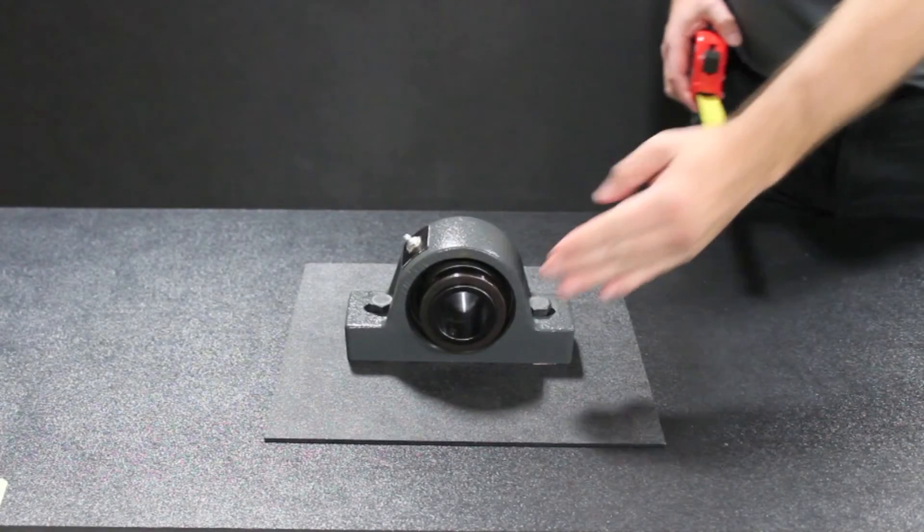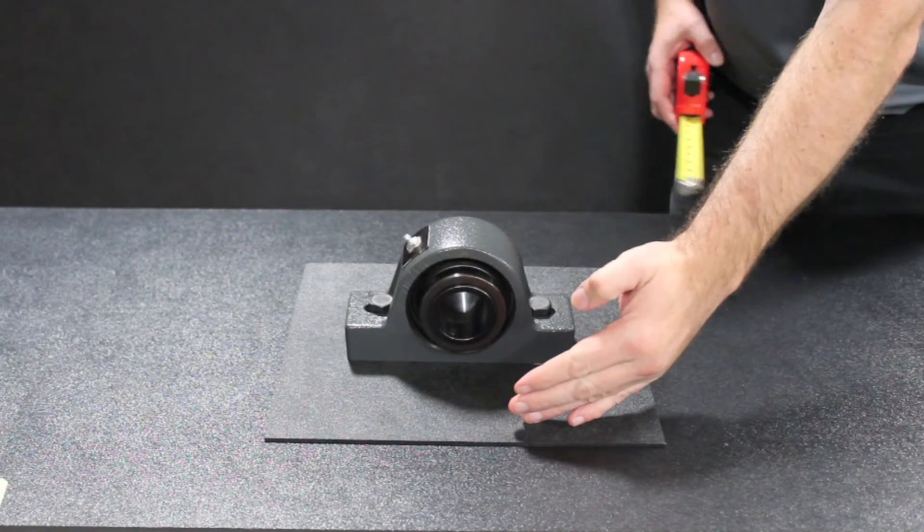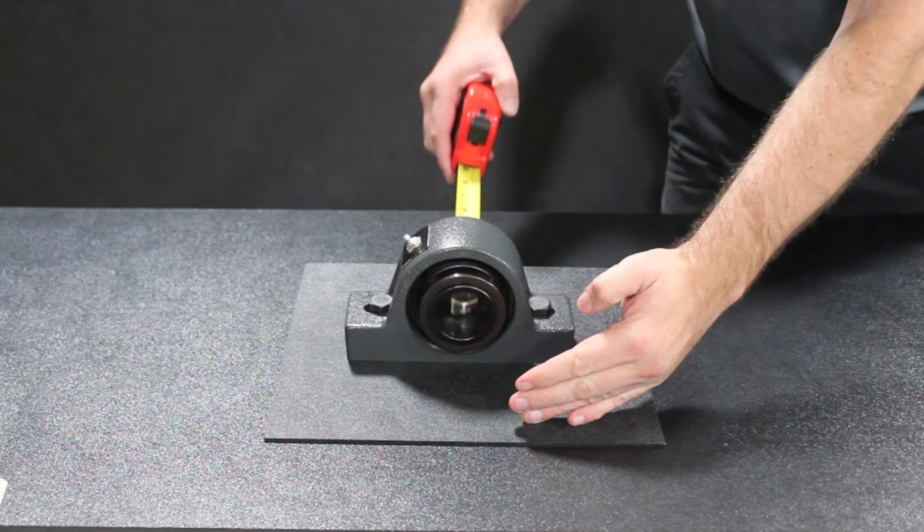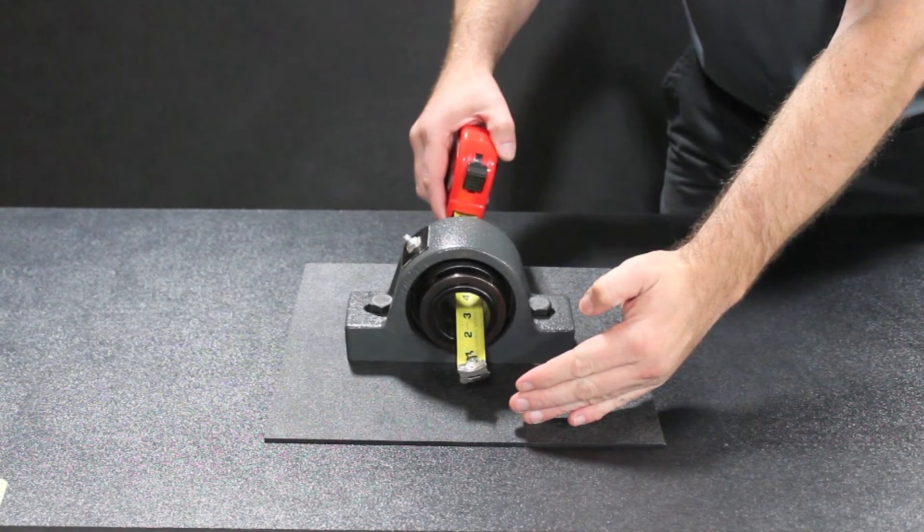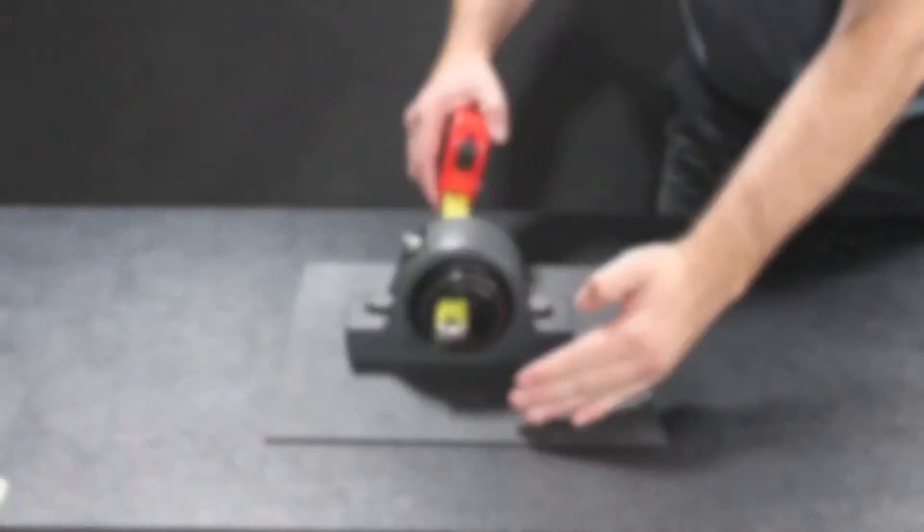Shaft terminus is found by measuring any length of shaft extending past the bearing's collar. In our example, there is no shaft extension, so the measurement is zero.